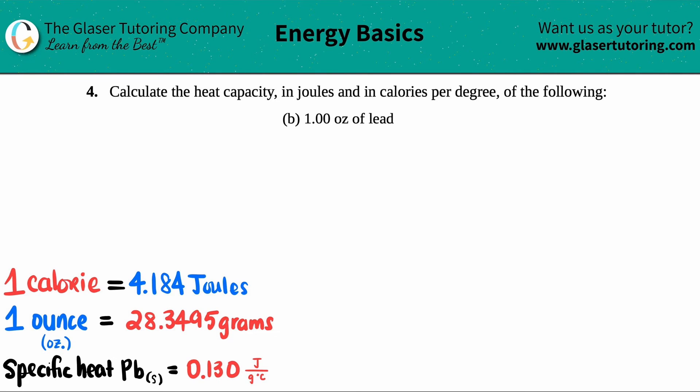Number four: calculate the heat capacity in joules and in calories per degree of the following. Letter b, we have to calculate the heat capacity of one ounce of lead.